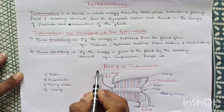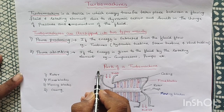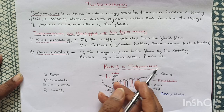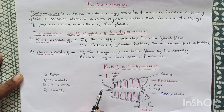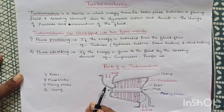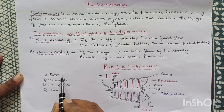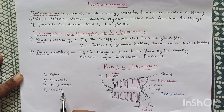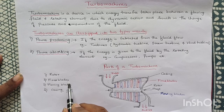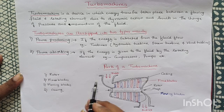Now we will study the general parts of a Turbomachine. This is the sketch of the Axial Flow Steam Turbine. The parts of the Turbomachine are: Rotor, Fixed Blades, Moving Blades, and Casing.